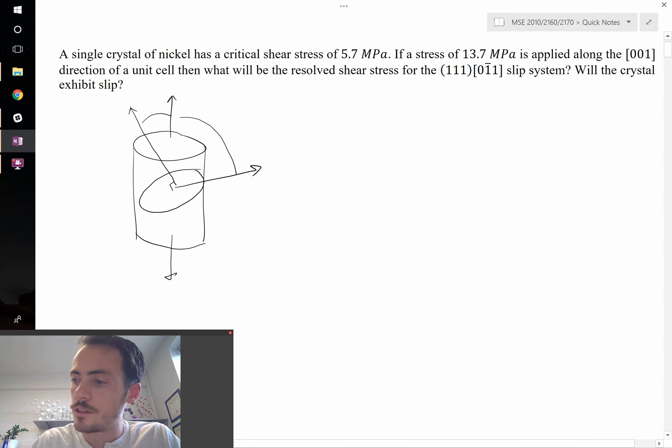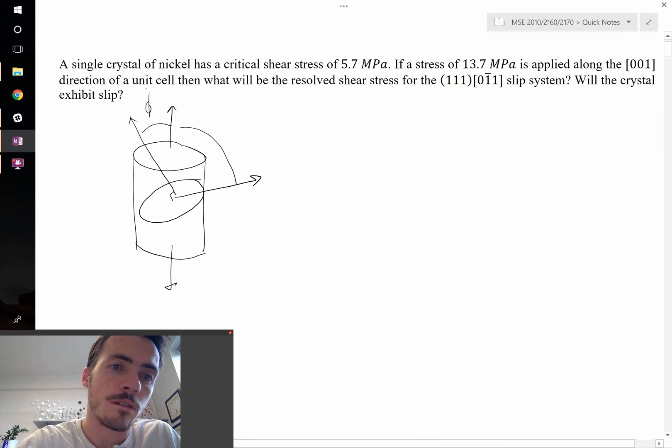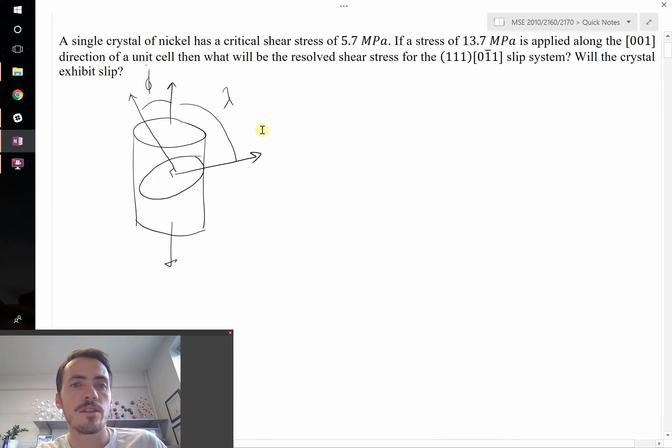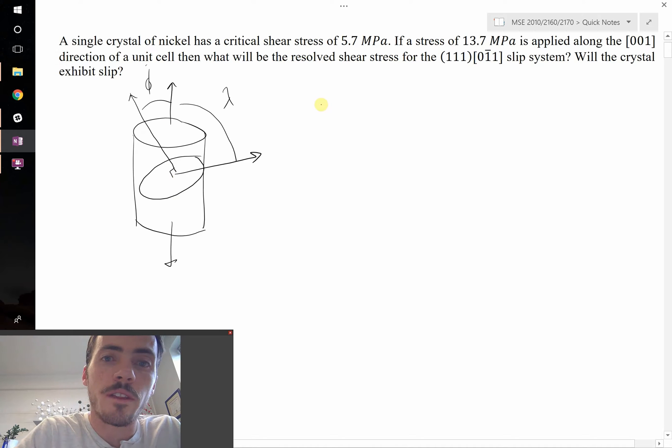We call this angle between the normal phi and we call this one lambda. Essentially, even though you're applying a load perpendicular to the surface, on some plane there is actually going to be a shear stress. So how this works out is that the resolved shear stress (RSS) is going to equal the applied stress multiplied by the cosine of those two angles: cos(phi) and cos(lambda).